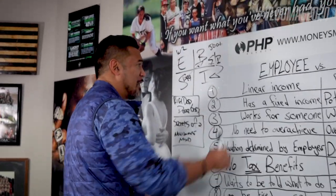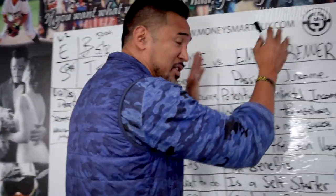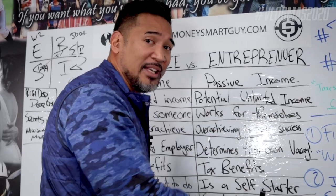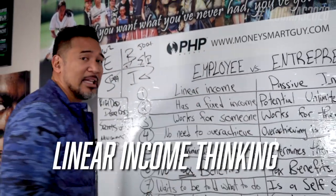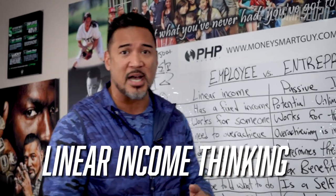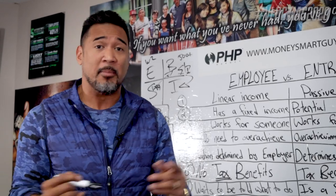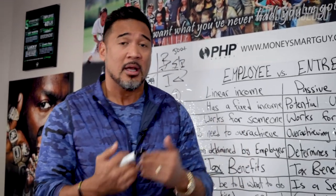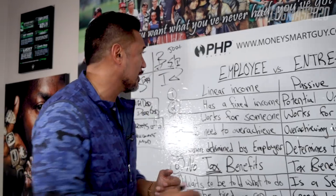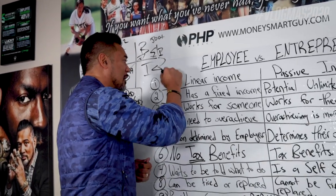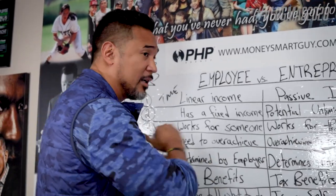Number one: employees think linear. Punch in, punch out — nine to five, 40-hour work week. Basically, I do a job, I get paid. That's called linear income. It's based on time and trading time for dollars.